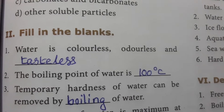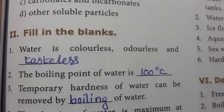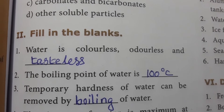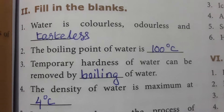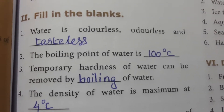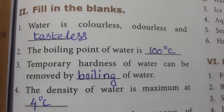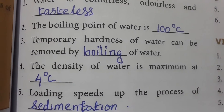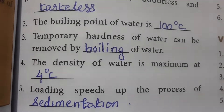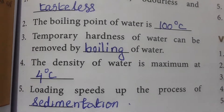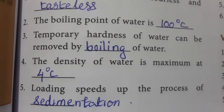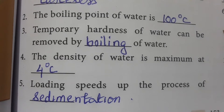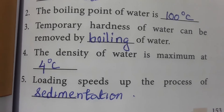Fill in the blanks: Water is colorless, odorless, and tasteless — odorless means no smell. The boiling point of water is 100 degrees centigrade. Temporary hardness of water can be removed by boiling. The density of water is maximum at 4 degrees centigrade. Alum speeds up the process of sedimentation.